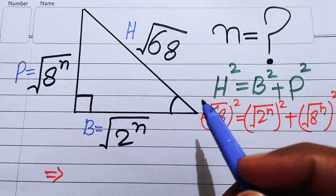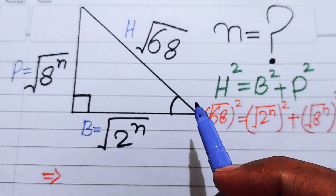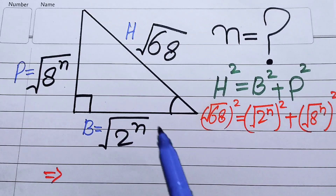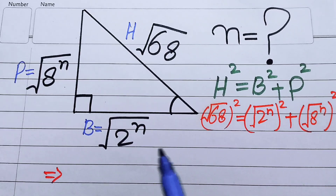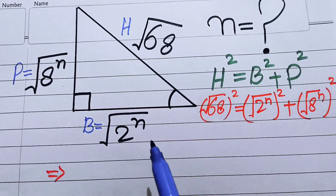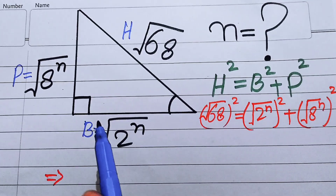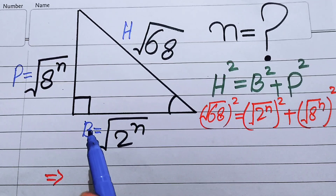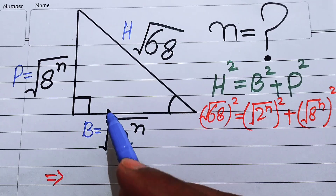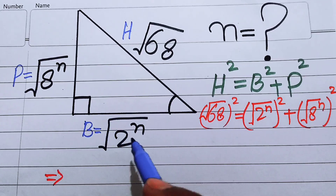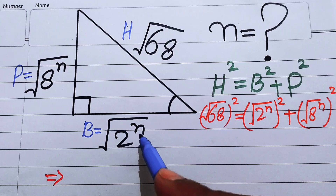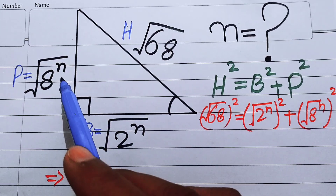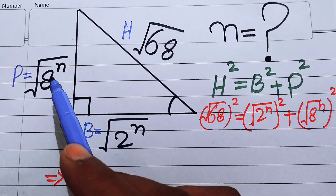Hello everyone, welcome back to the Map of Mathematics. In this video we are going to solve this nice math or geometry problem. Here we have a right triangle in which the length of each side is the square root of 2 to the power of n, the square root of 8 to the power of n, and the square root of 68.